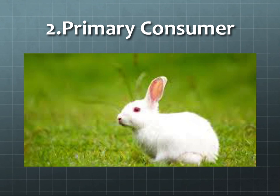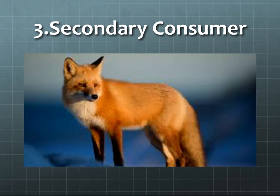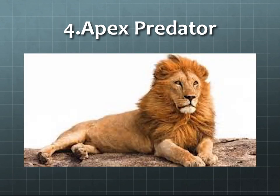Number two: the primary consumers. They are animals like rabbits that consume producers. They are also called herbivores, or plant eaters. Number three: the secondary consumers. They prey on the primary consumers. They are carnivores and omnivores — for example, a fox or bear.